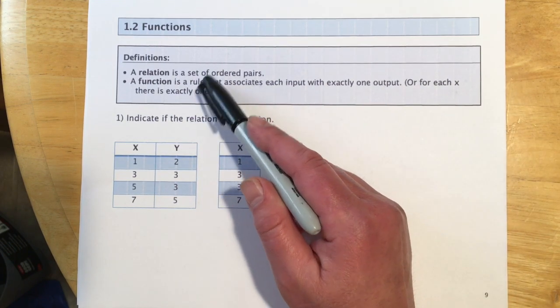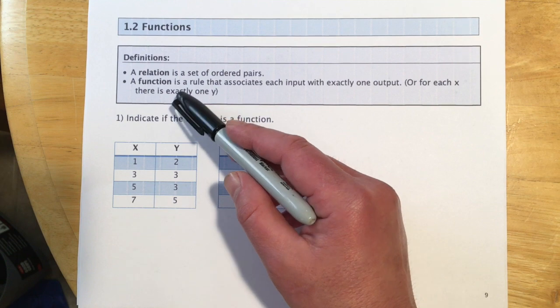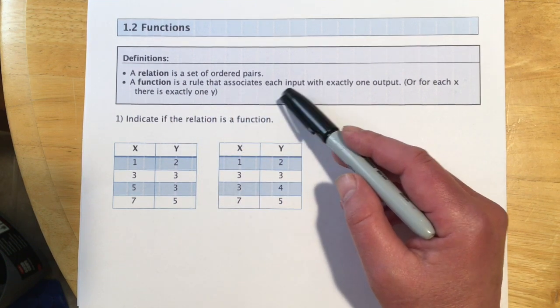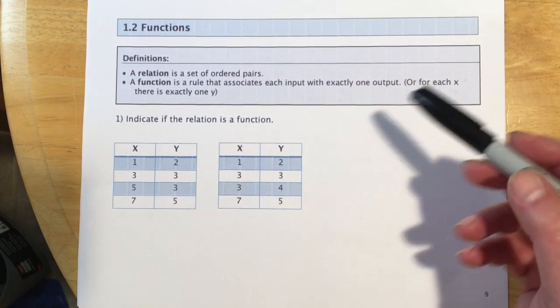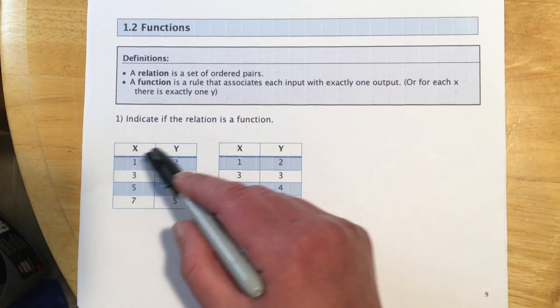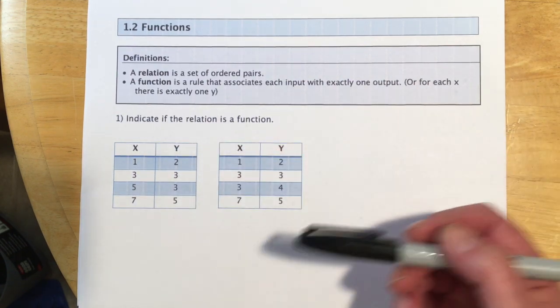A function is a particular kind of relation. It's a rule that associates each input with exactly one output. Or if you're more comfortable thinking inputs as x, outputs as y, for each x there's exactly one y.